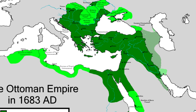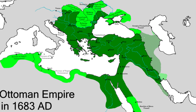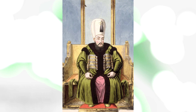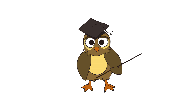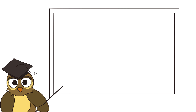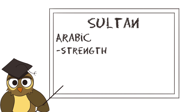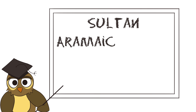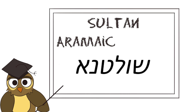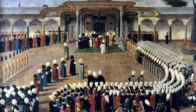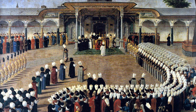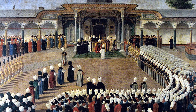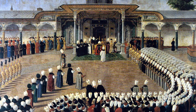A sultanate is simply the dynasty and lands ruled by a sultan. A sultan is a noble title with several historical meanings. We tend to think that the word means emperor, but that's not necessarily the case. Originally it was an Arabic word meaning strength, authority, or rulership, which likely came from an Aramaic word also meaning strength and authority. Because of the word's meaning, it came to be used as the title of certain rulers who claimed almost full sovereignty with a lack of dependence on any higher ruler.